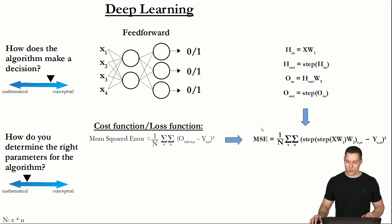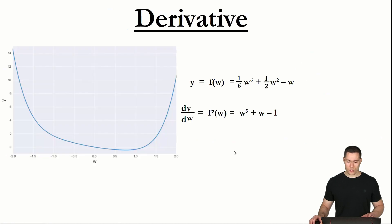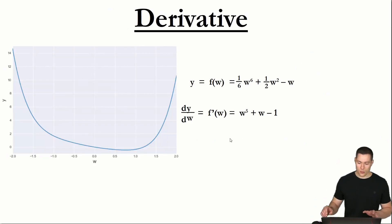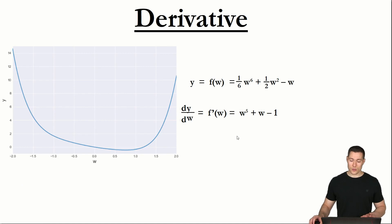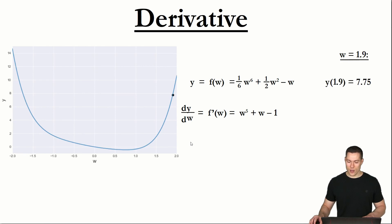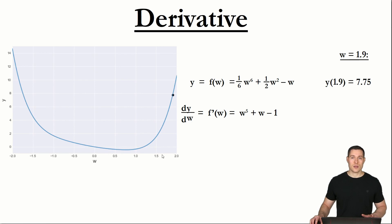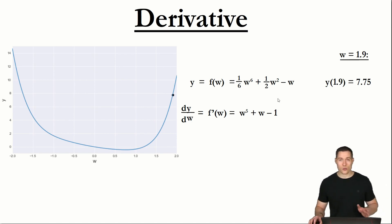We need a different numerical approach for finding the minimum of this function. One thing we could do is simply randomly pick a value for w — for example, 1.9 — so we would be at this point in the graph. Then we somehow adjust this w, either increasing or decreasing it, so that our function is thereby reduced and we get somewhere closer to the minimum.